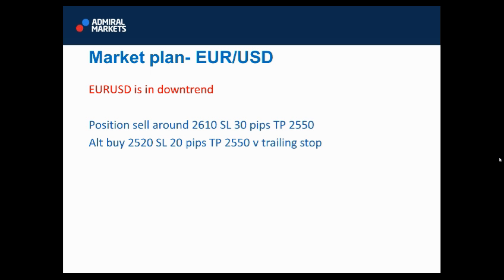How many points to put on trailing stop? 12 to 15 pips on trailing stop if you're using one, because sometimes momentum can kill us. Euro-Dollar and GBP/USD are both looking good, so you can put a trailing stop. I would advise putting on a trailing stop.